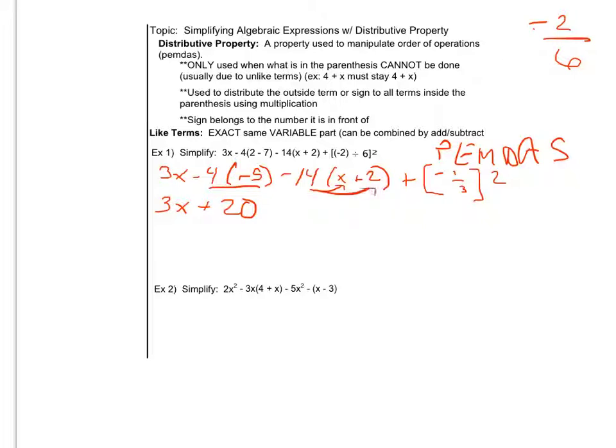So I just did that. Now I'm distributing that in. Minus 14x. Minus 14, because sign belongs to the number, times 2 is minus 28. Plus negative 1 third squared. Both the top and the bottom of the fraction, both the numerator and denominator, get squared. So negative 1 times negative 1 is 1. 3 times 3 is 9. So I get plus 1 ninth.